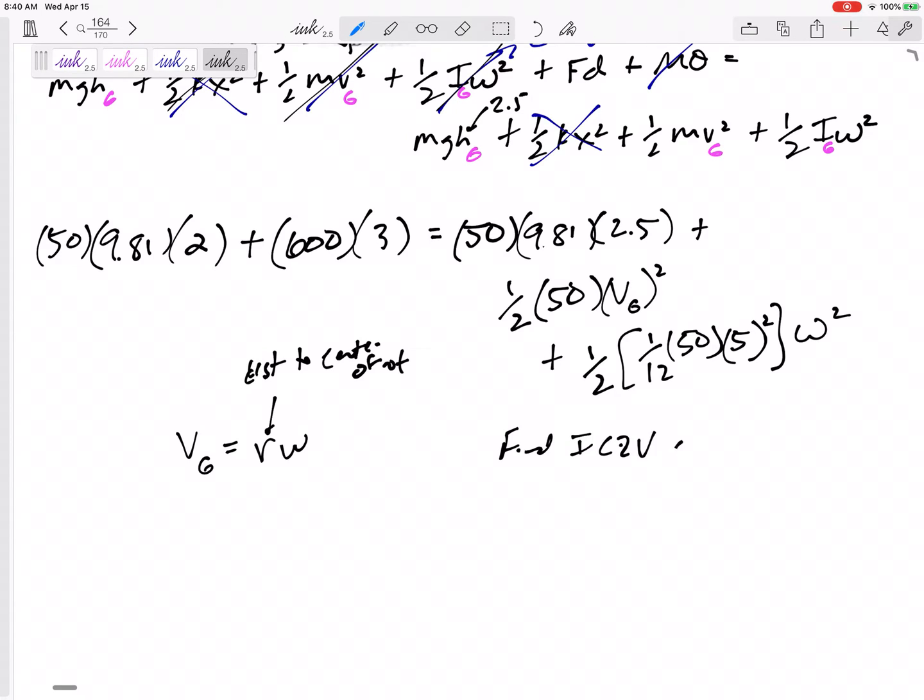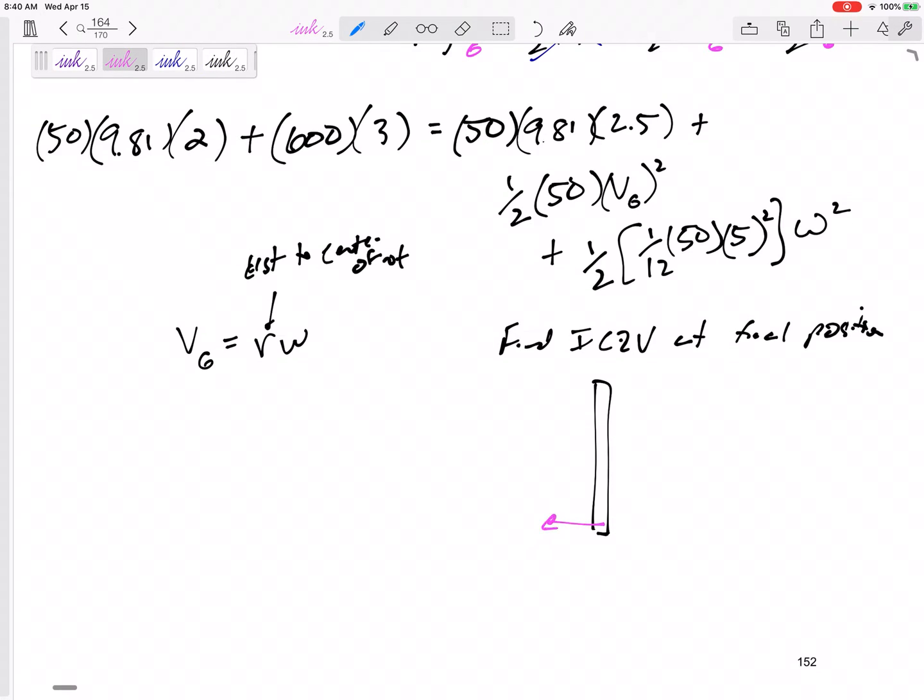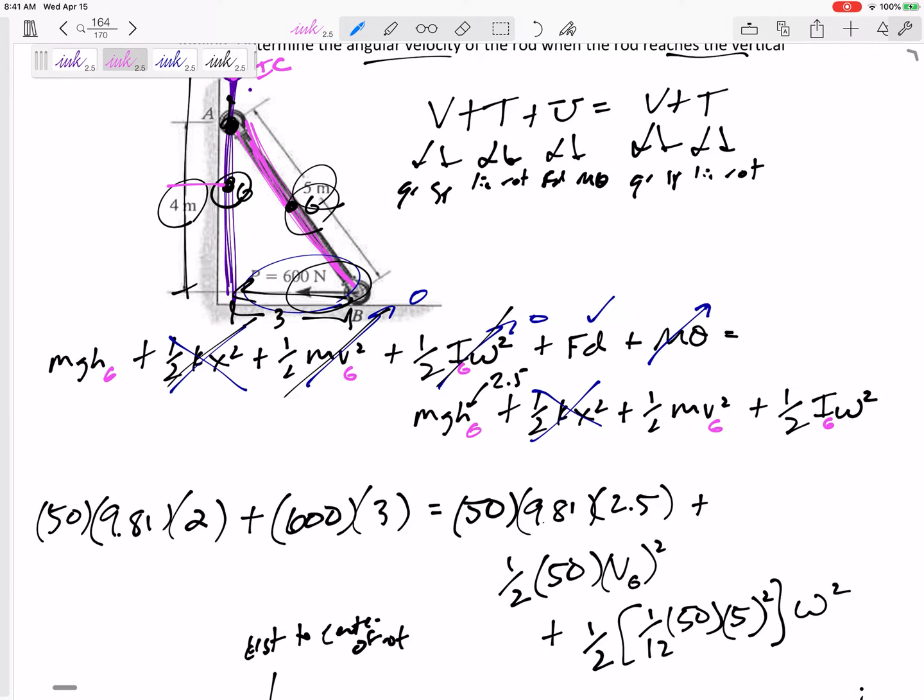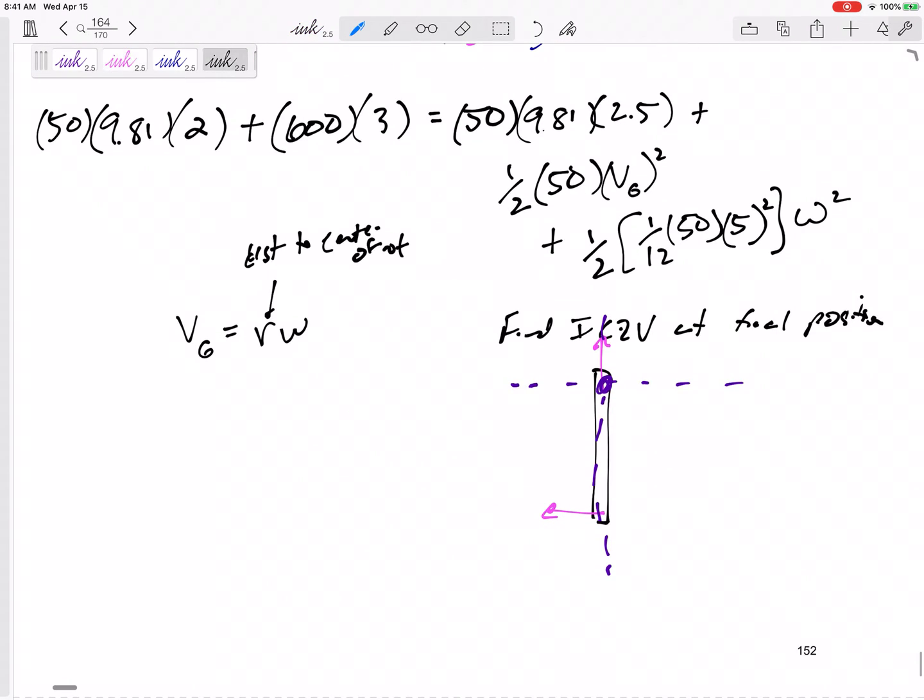So I want to find the instantaneous center of velocity, instantaneous center of zero velocity at the final position. So let's find ICZV at the final position. So at the final position it is vertical. This bottom is going down, this top is going up. So where is the center of velocity? The center of velocity is at this very very top. All right, so I shouldn't draw it right there, this very very top point right here. There's the instantaneous center. So how far is point G from the instantaneous center? 2.5, so VG = 2.5·ω. And I'm going to plug in that right there. I'm going to be careful to square 2.5 and square the omega, so 2.5² and ω².